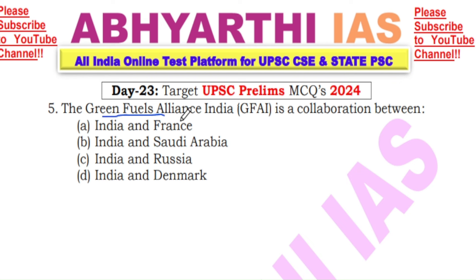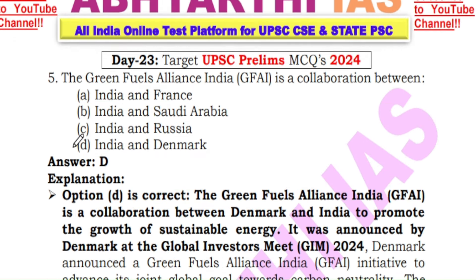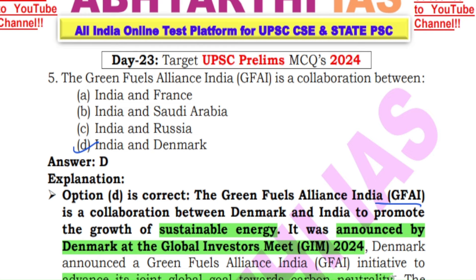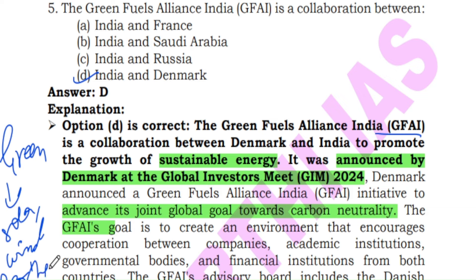Next question: The Green Fuels Alliance India (GFAI) is a collaboration between India and — A) France, B) Saudi Arabia, C) Russia, or D) Denmark? The answer is D — GFAI is a collaboration between India and Denmark to promote sustainable energy growth. It was announced by Denmark at the Global Investor Meet of 2024 to advance joint global goals towards carbon neutrality. The Green Fuels Alliance will promote renewable and green sources of energy, including solar energy, wind energy, geothermal energy and other renewable sources.